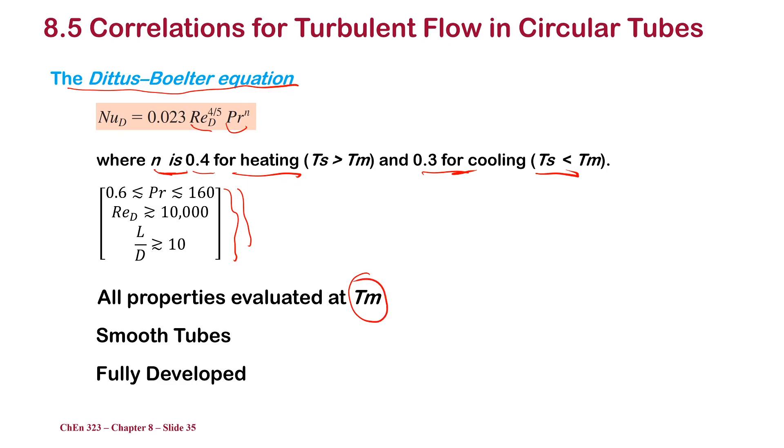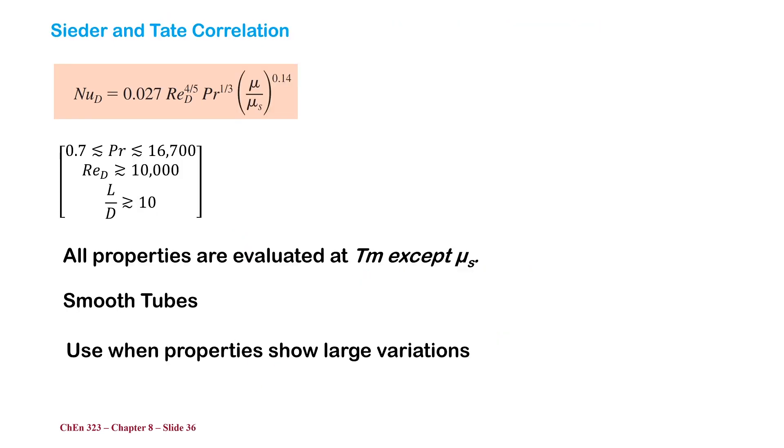All the properties you see here need to be evaluated at T inlet plus T outlet over 2. This is for fully developed turbulent flow. We have another equation called the Cedar Tate equation.